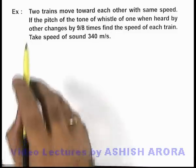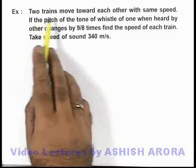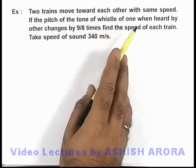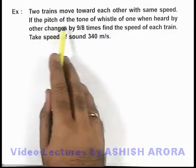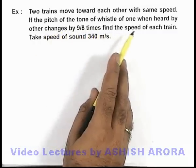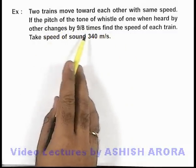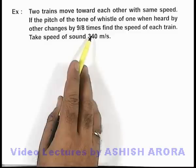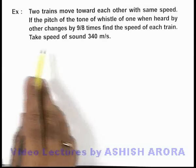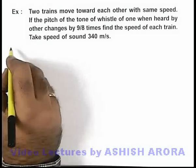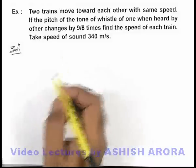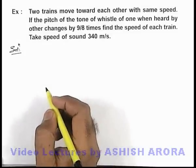In this example, we are given that 2 trains move toward each other with the same speed. If the pitch of the tone of the whistle of one, heard by the other, changes by 9/8 times, we are required to find the speed of each train. We can take the speed of sound to be 340 meters per second.